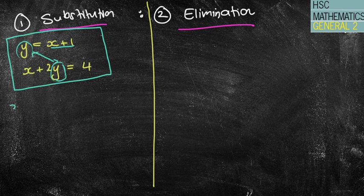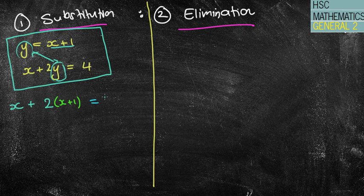So what I'm actually going to do is this, I'm going to have x plus 2, now the y, instead of having y, I'm going to put x plus 1, and then we've got the equals 4. So all you can see, what I've done, is I've simply replaced the y, or substitute the y, with the x plus 1, and then I'm going to solve that.